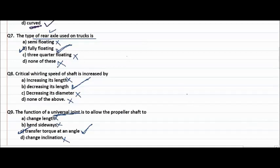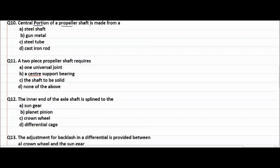The central portion of a propeller shaft is made from a steel shaft, gun metal, steel tube, cast iron rod. So there can be a confusion. Obviously gun metal and cast iron rod are not used, but there can be a confusion between steel shaft and steel tube. The right answer will be steel tube and not steel shaft. Next question, a two-piece propeller shaft requires one universal joint, a center support bearing. The right answer is a center support bearing is required for a two-piece propeller shaft.